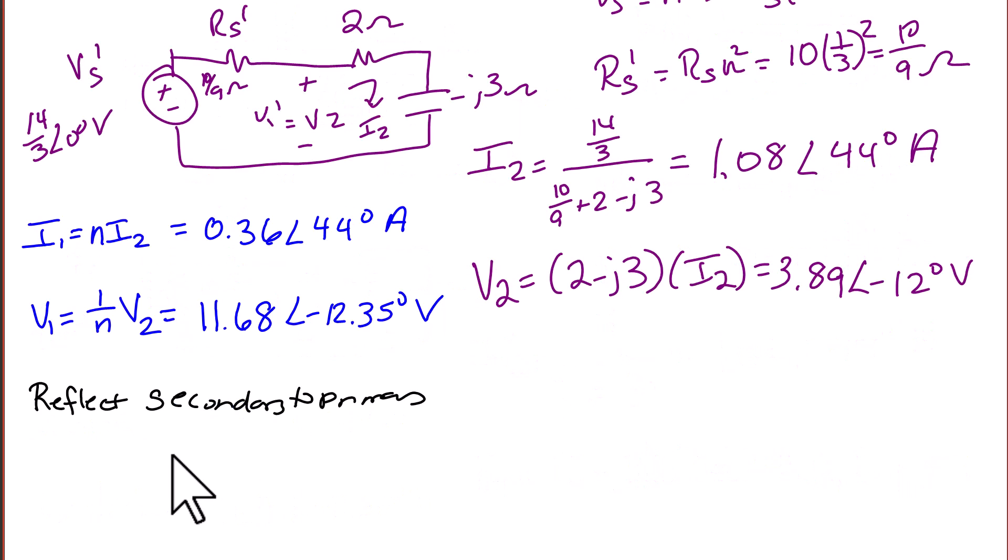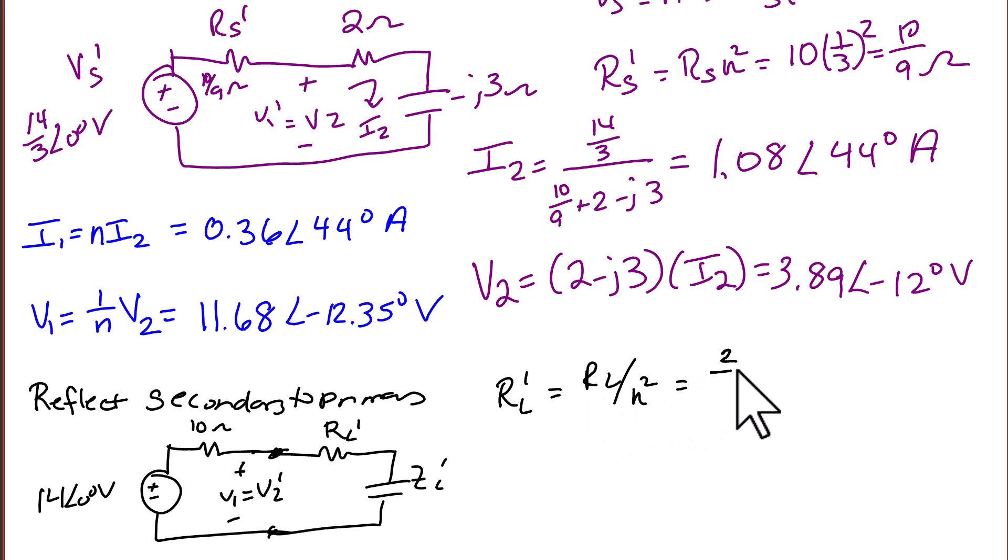Now what if we wanted to solve this problem by reflecting the secondary to the primary? We copy down the loop circuit again, but now we put the values 14 angle 0 for the source and 10 ohms for the source resistor. V1 is going to equal V2 prime. We need to reflect ZL prime, ZL, and RL and ZL to become RL prime and ZL prime. RL prime is equal to RL over N squared, or 2 over 1 ninth, which is 18 ohms.